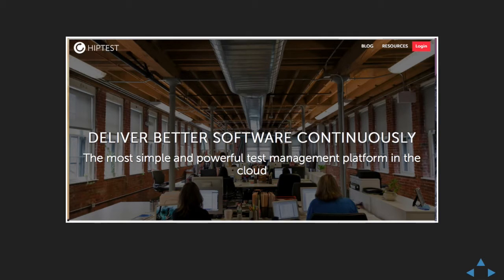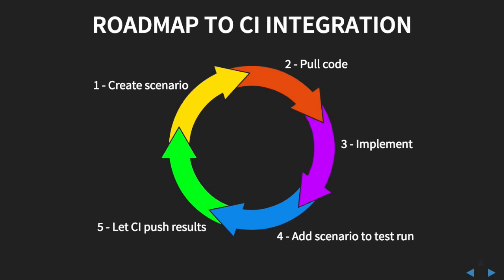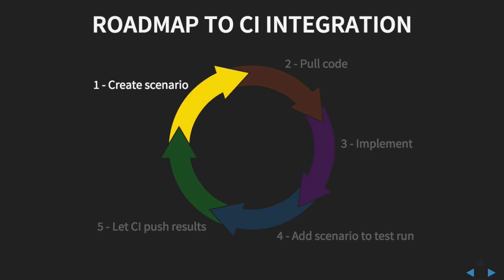Let's see what the five steps are to go from HipTest to an automated test set. When we talk about five steps to implement your HipTest project into executable tests, the reality is that only the first three steps are really needed to get automated tests. The two last steps are extra steps that will allow you to integrate the newly implemented tests into a CI process.